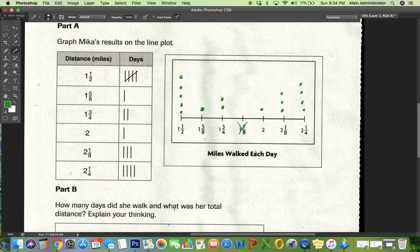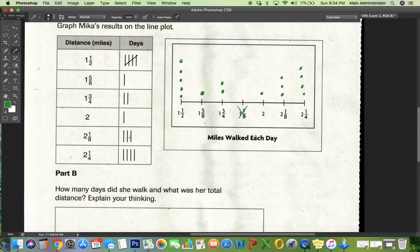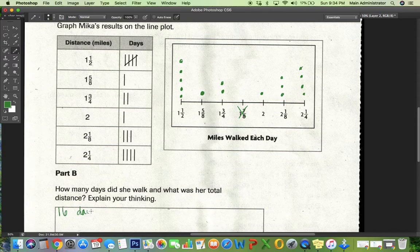How many days did she walk and what was her total distance? I'm going to try and do some of this mentally. First, how many days? Let's see. Five, six, seven, eight, nine, 10, 11, 12, 13, 14, 15, 16 days of walking.